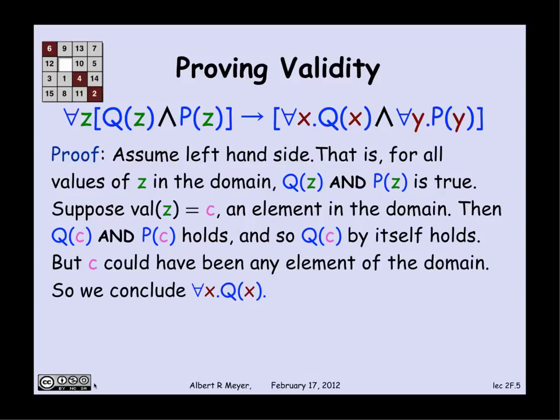Now, that step of saying I proved it for Q of a given element without making any assumptions about the given element, except that it's in the domain, and therefore I can conclude that it holds for all domain elements, very natural and plausible and understandable rule, and it's a basic axiom of logic called UG, universal generalization. Come back to it in a minute.